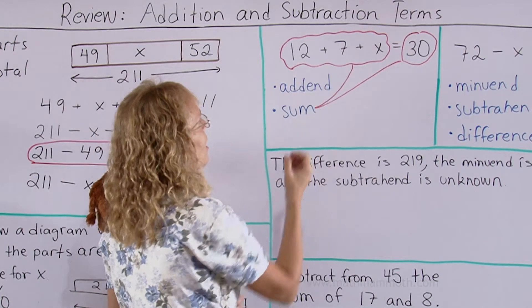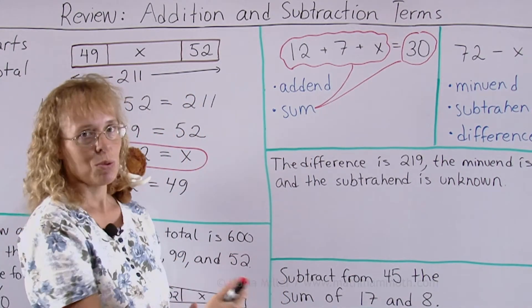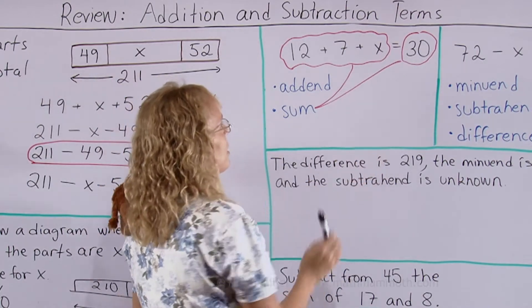So 12 plus 7 plus x is called a sum and 30 as the answer is also the sum. You can think of this as the sum that hasn't been solved yet, sum that is written out. And this is the sum that has been solved.